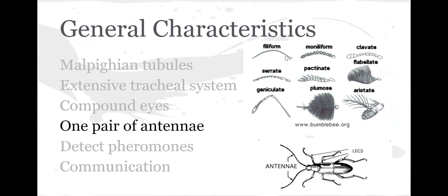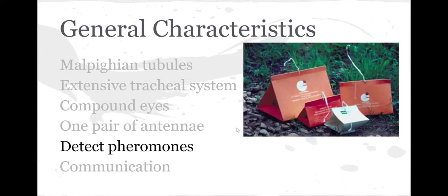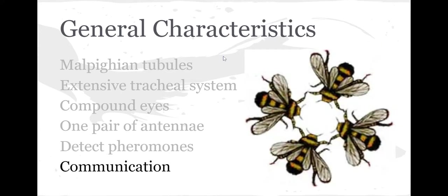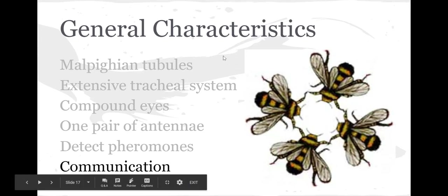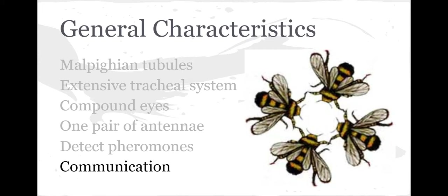Insects have one pair of antennae. You can see there's a variety of types: single antennae and big plumage antennae. They use their antennae to detect pheromones. Here you can see different traps that allow us to catch insects by putting out pheromones or special smells. Insects typically use that for communication. For example, honeybees go through a series of dances, which we learned about earlier this school year.